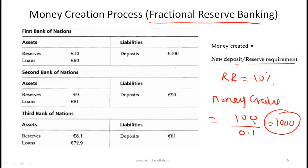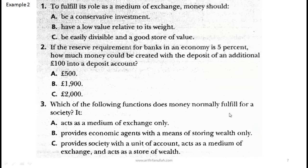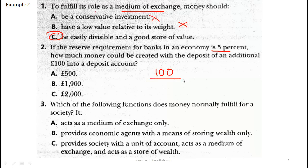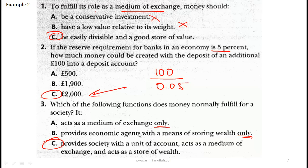This is called fractional reserve banking because only a fraction of deposited money is kept as a reserve, and the rest is loaned out. For practice: to fulfill its role as a medium of exchange, money should have high value relative to weight and be easily divisible and a good store of value. With a 5% reserve requirement, new deposit of $100 creates $100 / 0.05 = $2,000 in money.